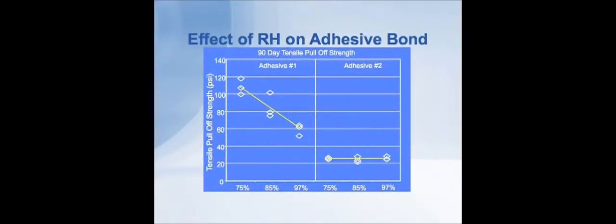And now the manufacturer can take this data and set a limit and say, okay, 75% is good, 85% we've lost 20% of our bond strength. We're going to set a limit of 75% for this particular adhesive. And that's a precise, scientific, technical way of doing it.